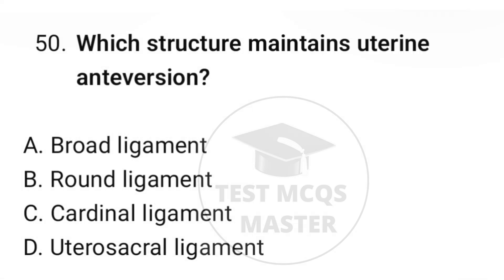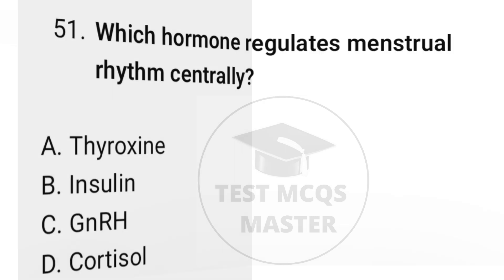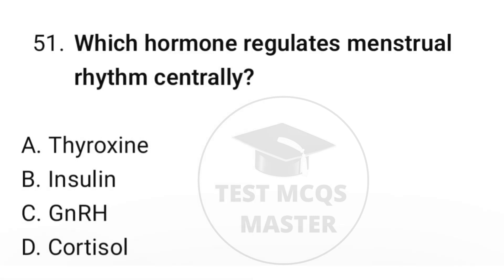Question number fifty: which structure maintains uterine anteversion? The correct option is B, round ligament. Question number fifty-one: which hormone regulates menstrual rhythm centrally? The correct option is C, GnRH.